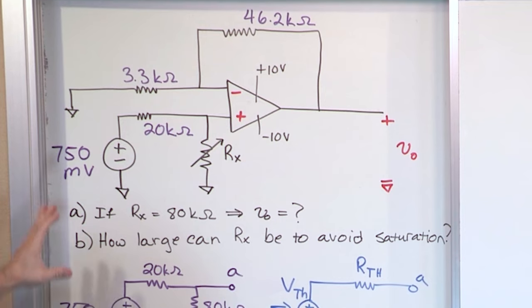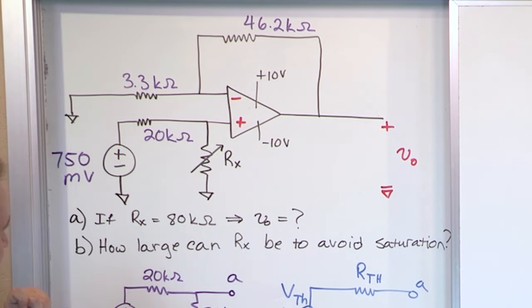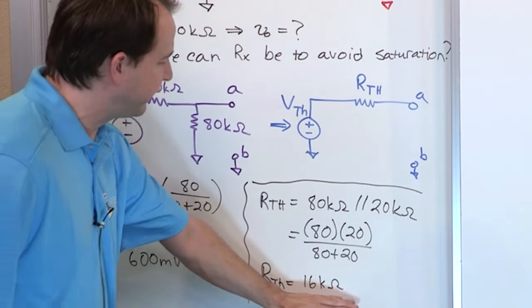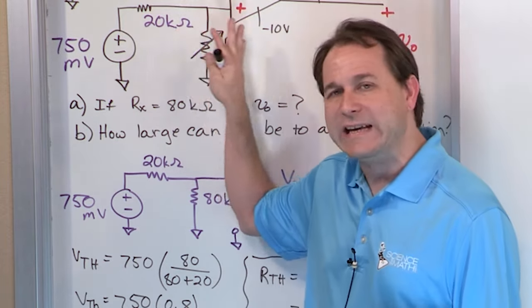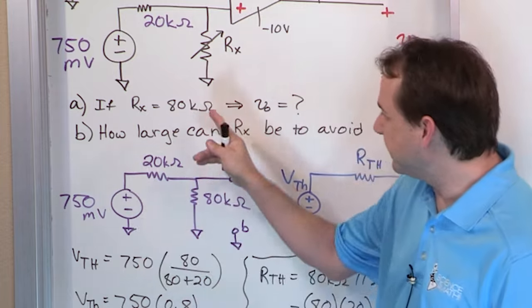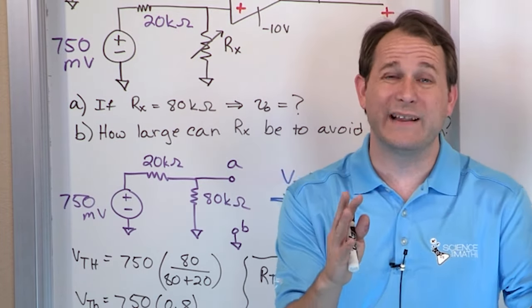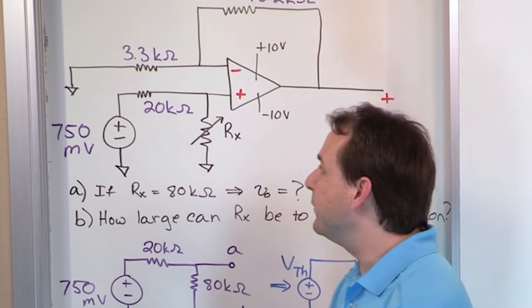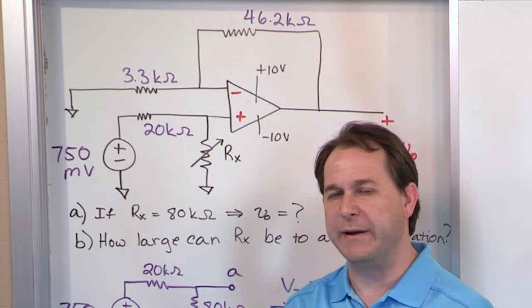So what does this mean? Our original problem had a 750 millivolt source with this resistor network. Functionally, from the terminal where the op amp is connected, this network looks exactly like a 600 millivolt source in series with a single 16 kilohm resistor. From here on out, you completely ignore what the circuit actually is, because functionally it's exactly the same thing as a 600 millivolt source with a single resistor. You mentally replace it with what you've calculated, because that matches what we learned in the last section.